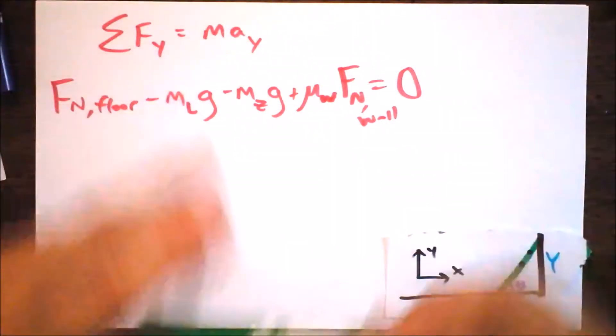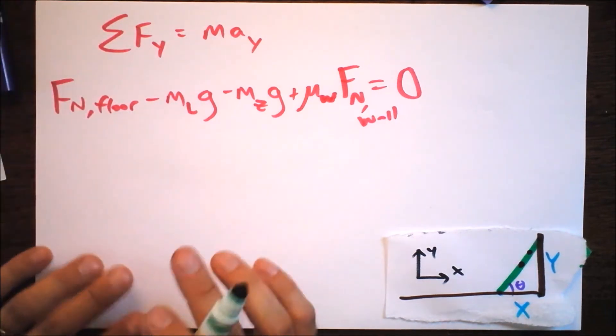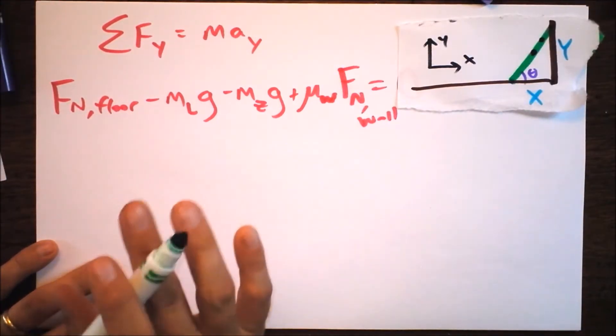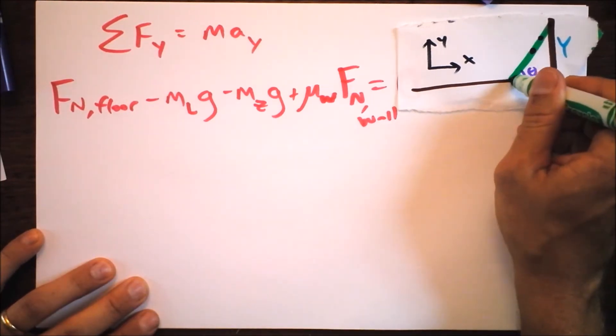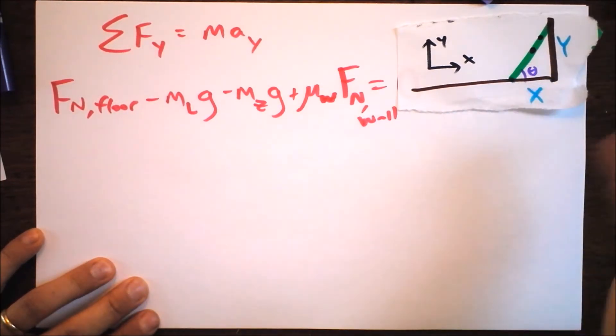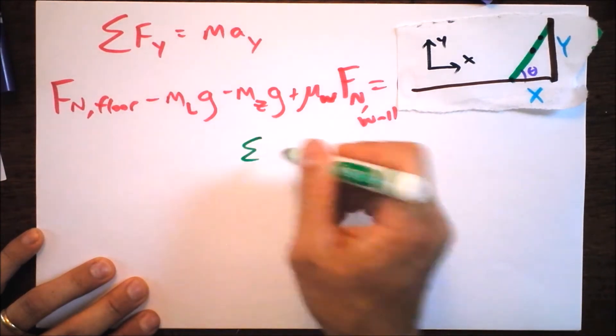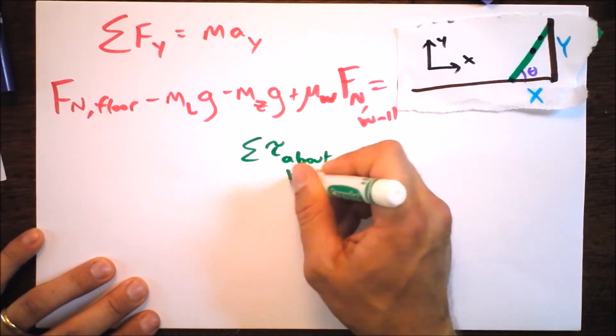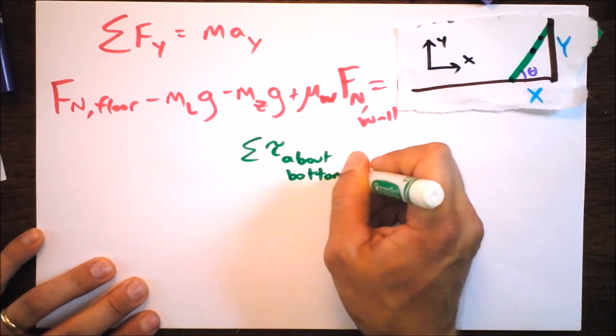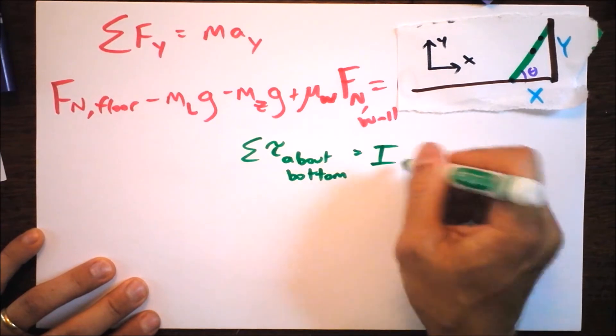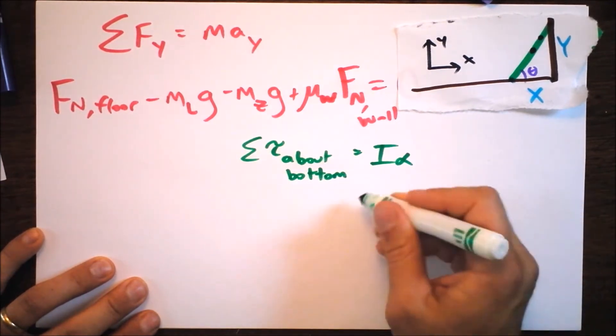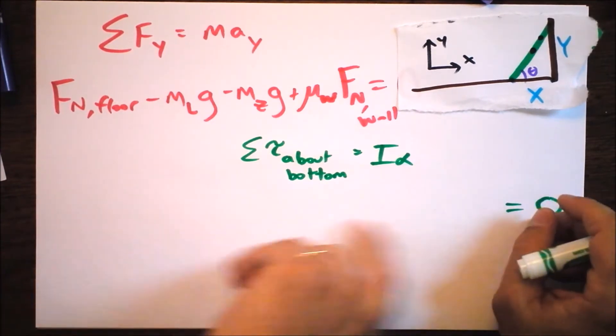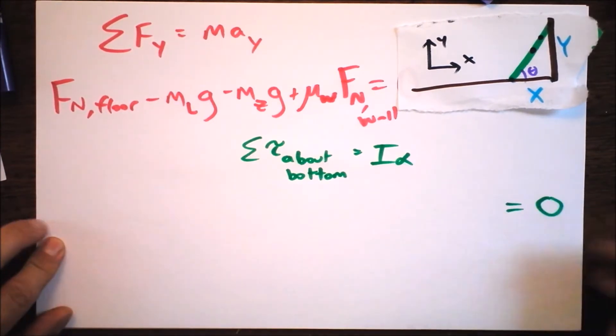Let's talk first about the rotation of the ladder about this point right here. If it's just about to slip, then we say that the torques are in fact balanced. So I'm going to say the torque about bottom is I times alpha, but in our case, the torque about the bottom is going to be zero. So now here I'm going to list all the torques about the bottom.